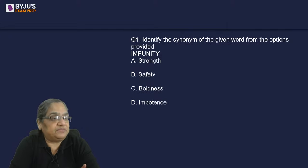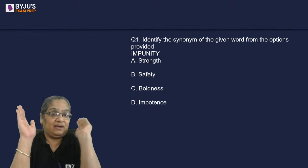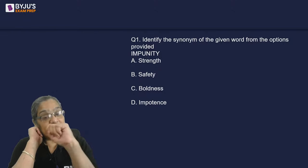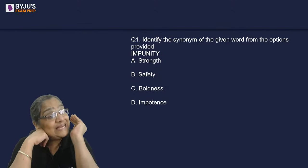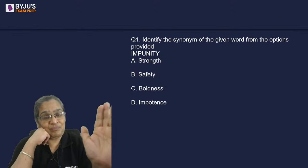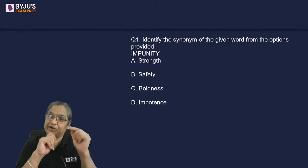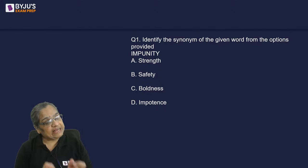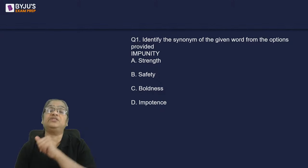Let's look at synonyms first. Remember, synonym and meaning are two different things — there is a slight difference. A synonym is anything that has a similar meaning but not exactly the same. In different contexts a word is used, there would be different meanings given to it.